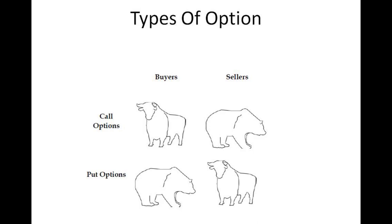We have two types of options — calls and puts — and you can choose to either buy or sell those, giving us four positions. Some are bullish and some are bearish. A bullish person expects the price of the underlying to go up and plans to profit from that, while a bearish person expects the price to fall. We've put little bull and bear icons on the slide to help illustrate the viewpoints of various option traders.